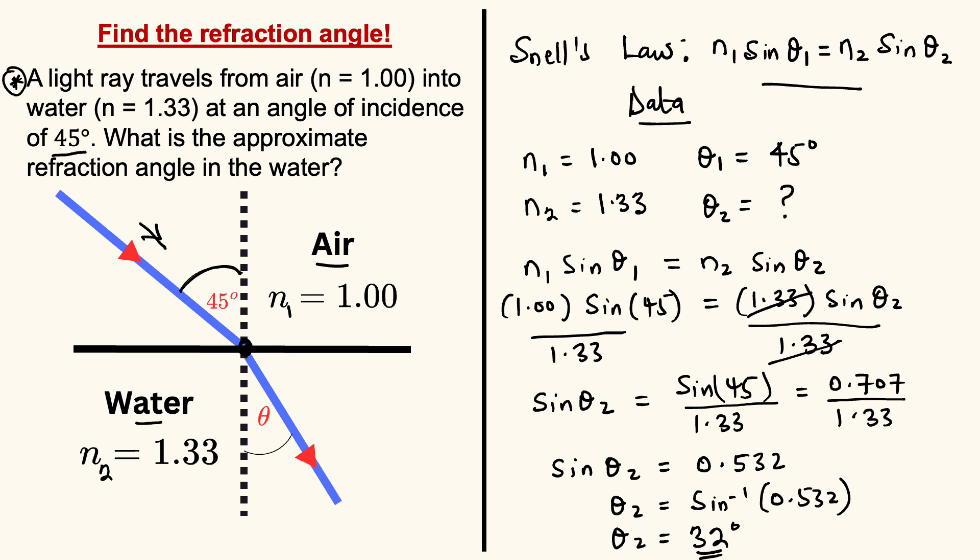And this is the refraction angle, the amount of bend from the normal. As light was incident at the point of incidence with respect to the normal at an angle of 45 degrees, this light ray enters the water and bends towards the normal because the water is denser than air.